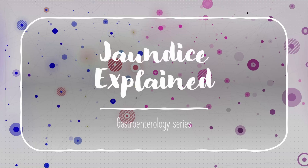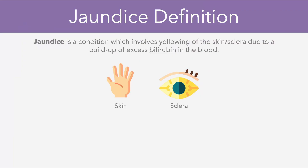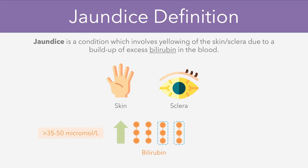Today we're going to be taking a look at jaundice as part of the gastroenterology series. As a starting point, we can define jaundice as a condition which involves yellowing of the skin and the sclera of the eyes. The reason why it happens is that we have a build-up of a compound known as bilirubin, which has a yellow-orange tinge to it. When the levels of bilirubin exceed around 35 to 50 micromoles per litre, this results in jaundice becoming visible.